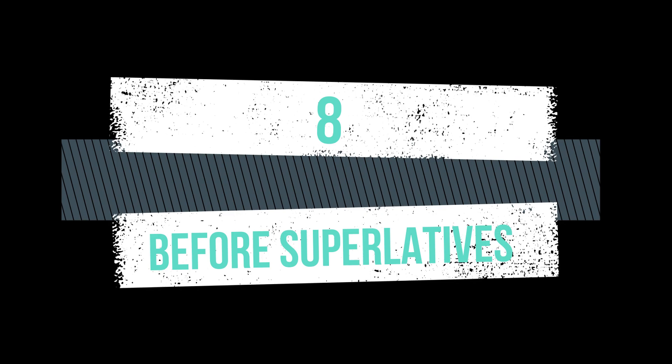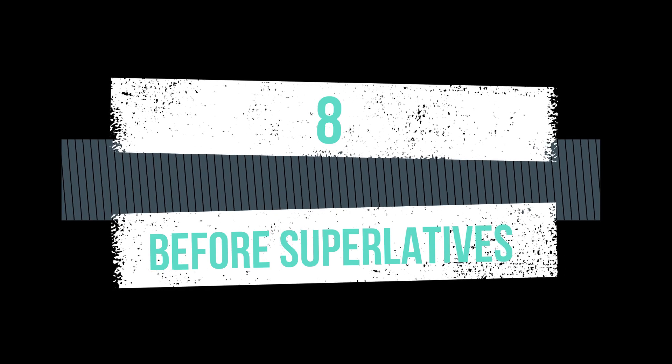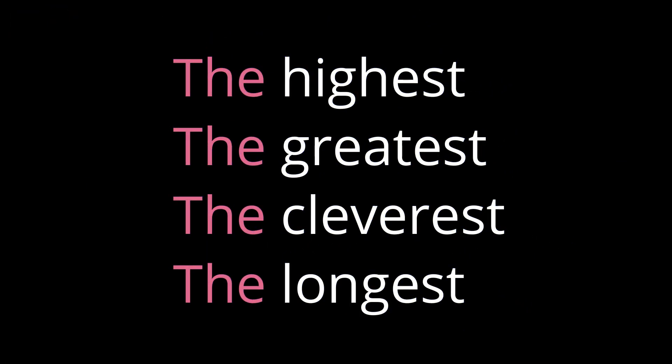The eighth point is: 'the' is used before superlative degrees — words which end with '-est'. Examples: the highest, the cleverest, the longest, the greatest. Sentences: 'He is the cleverest boy in the class.' 'Ravi is the tallest boy in the class.' 'The Nile is the longest river in the world.'